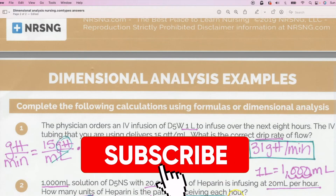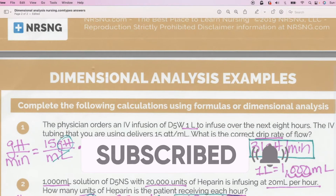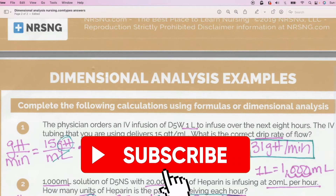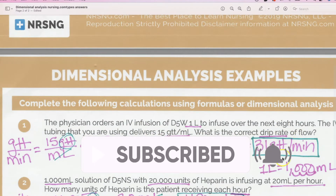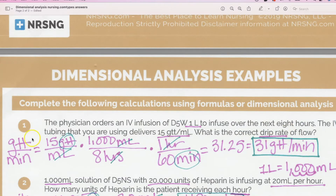I'm going to show you how I worked it out, and then I'll show you how nursing.com worked it out. Always start with what is ordered. What do we need to find? We need drops per minute, so that's the unit of measurement we put on the left side. What has drops in it? It's 15 drops per milliliter. So we put 15 drops per milliliter.